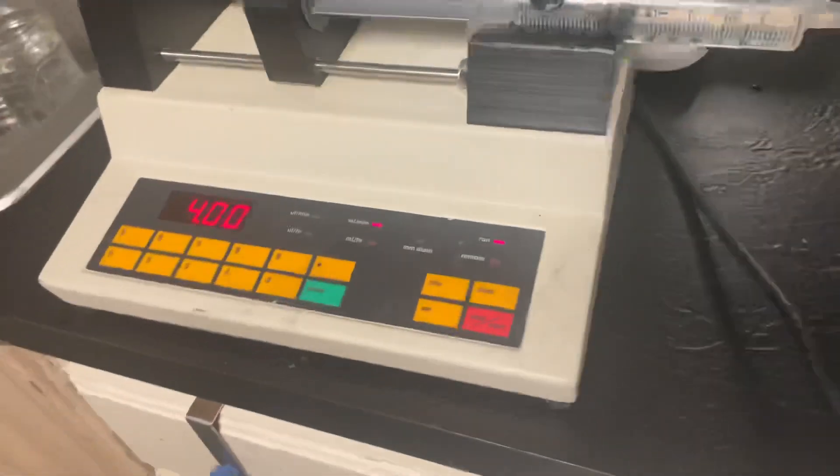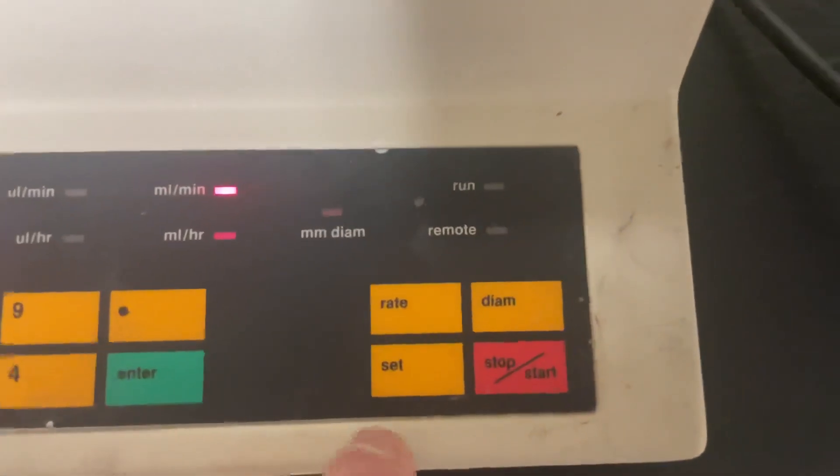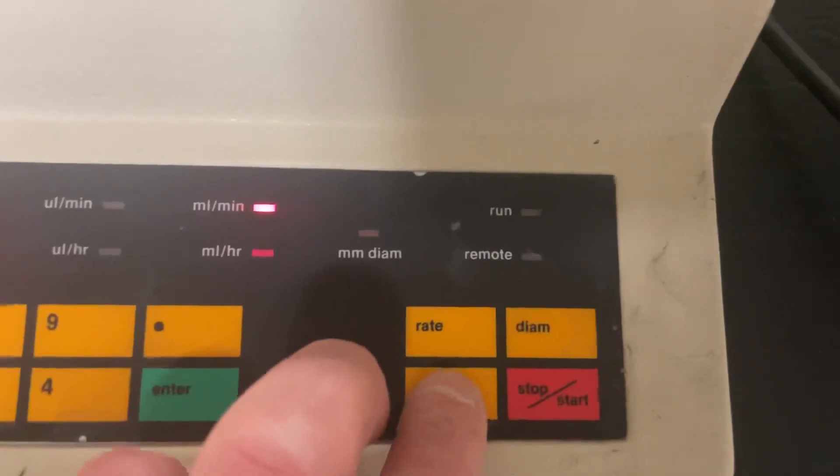Let me show you, we're going to change this now. We stop it and we set press and rate. Now we go to 6, and this will be 6 milliliters per minute.